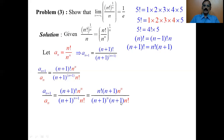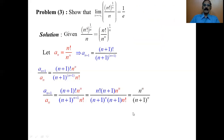Since n+1 to the power n+1 can be written as n+1 to the power n times n+1 — just as a cubed equals a squared times a — after cancellation, the n+1 in the numerator and the n+1 in the denominator cancel. Similarly n factorial and n factorial cancel, leaving us with n to the power n divided by n+1 to the power n.